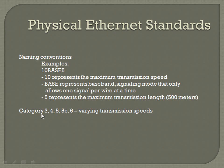And then the categories of cabling — like we talked about before, there's Ethernet the cabling standard and Ethernet the framing standard. Your Category 3, 4, 5, 5E, and 6 usually have varying transmission speeds. And then you also have shielded Category 6, where you protect the wire from outside interference.